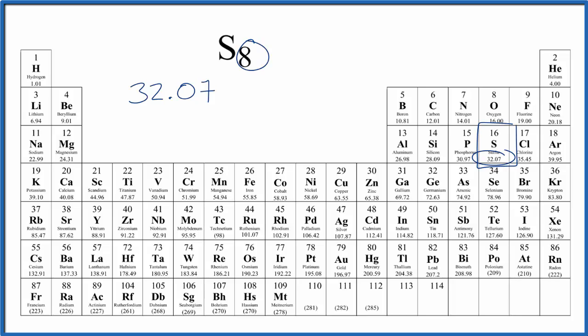Since we have eight of these sulfur atoms bonded together, we're going to put an 8 here, and when we multiply 32.07 times 8, we end up with 256.56 grams per mole.